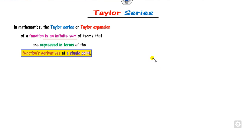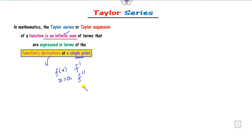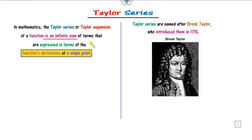In this lecture we will see what is the Taylor series and how you can find it for any function. The Taylor series is an infinite sum — it expresses a function f(x) that has infinite derivatives at a single point. If the point is a, then you can find f', f'', f''' and so on up to the nth derivative at this point. The Taylor series was introduced by Brook Taylor in 1715.